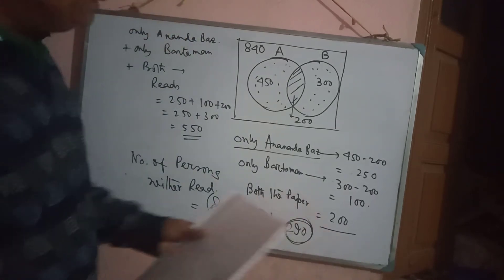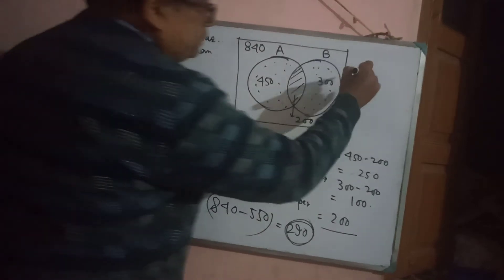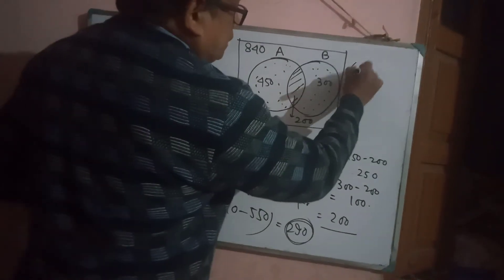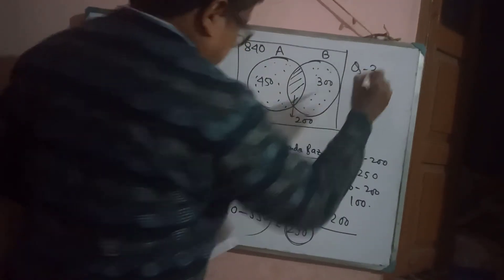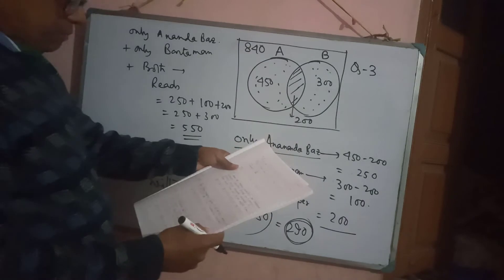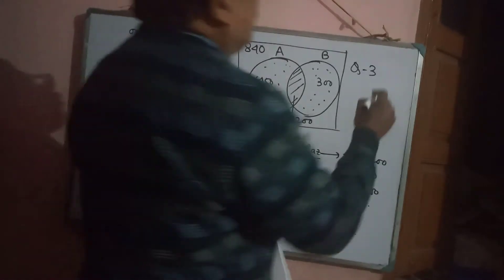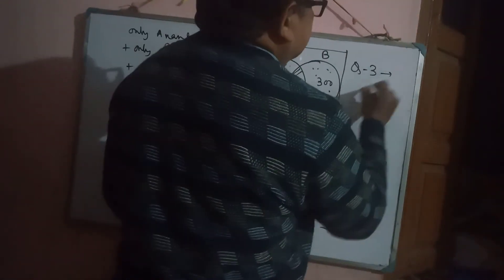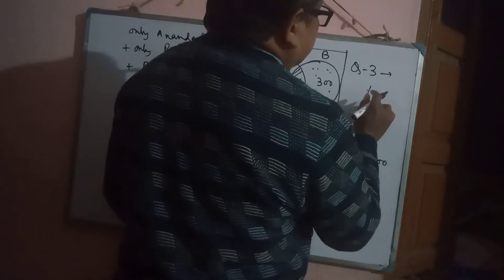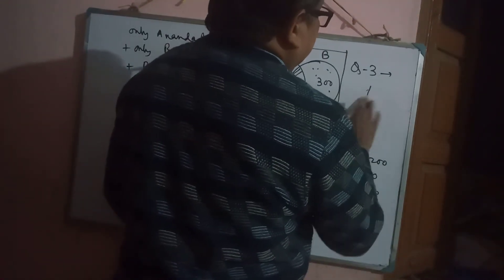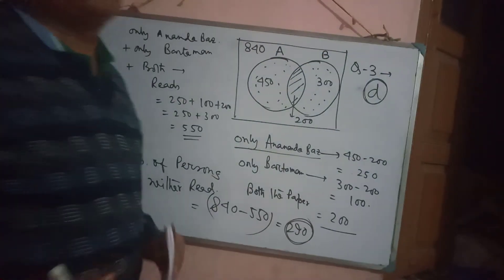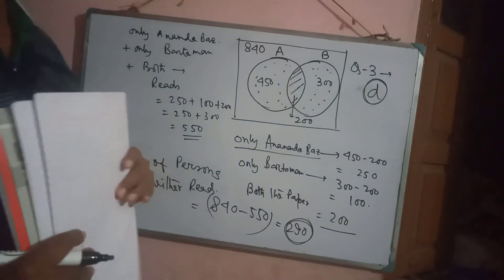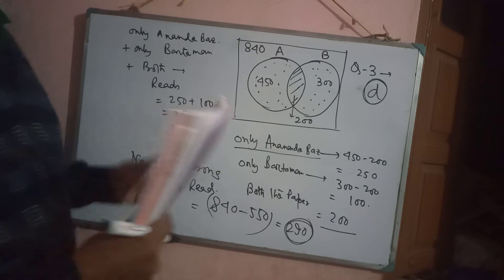The option is D. So answer for question number 3 is option D — 290 persons read neither paper. Option D is correct.